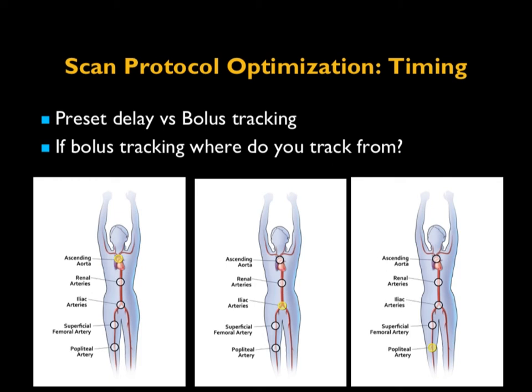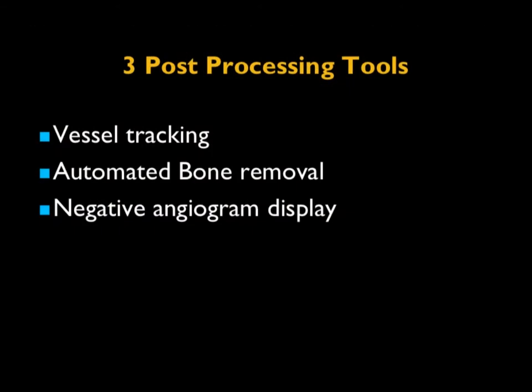When you think about tracking, vessel tracking is what we talk about. It's important to know how your system works and to use it correctly. The faster you scan, the less triggering delay you want because the scan will be over in five seconds — you want to make certain the patient is not still being injected at 10 seconds. Post-processing tools developed for a range of applications are very valuable here: things like vessel tracking, bone removal, and negative angio display.